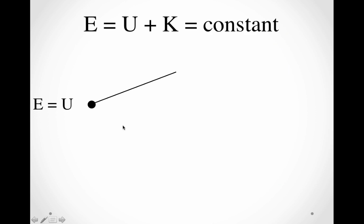Let's look at this in diagram form. This is our law of conservation of energy. The total energy is equal to potential plus kinetic. At the top, when the pendulum was raised up, we did work to raise it to this point. The energy is all potential — it's not moving for an instant right here, so there's no kinetic energy, and it's all potential.